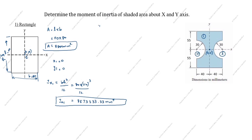Now we calculate Iy1. The formula is Iy1 = h·b³/12. With h = 110 and b = 80: Iy1 = 110 × 80³ / 12 = 4,693,333.33 mm⁴.